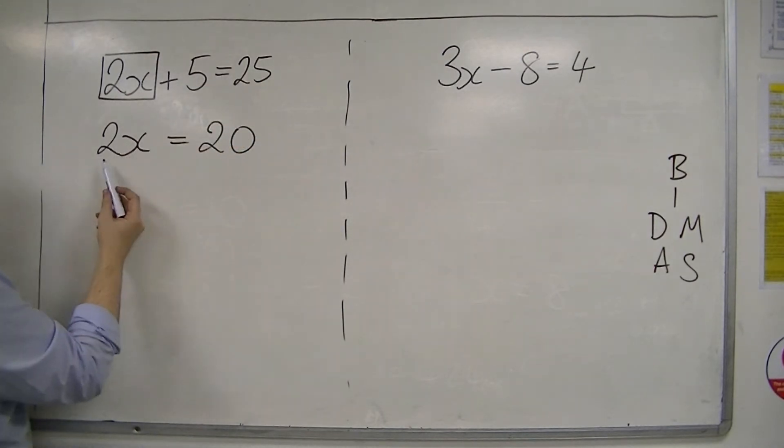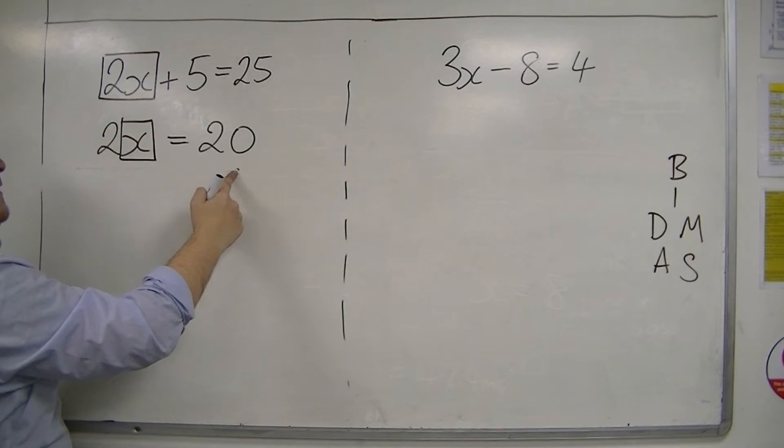You then are left with a one-step equation, 2x equals 20. So two lots of something must be 20, so that something must be 10.